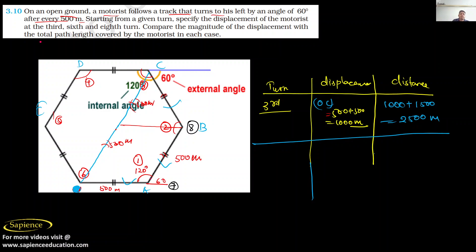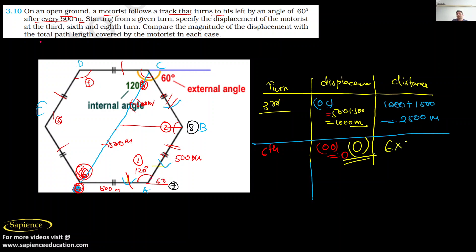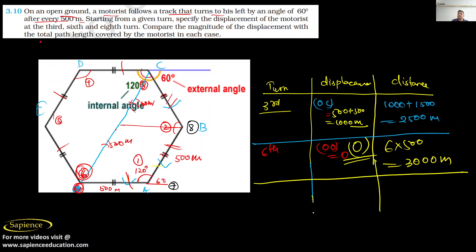Now for the 6th turn: the 6th turn brings the motorcycle back to the starting point O, so the initial and final points are the same. Therefore displacement is 0. The total distance covered is 6 sides of 500 meters each: 6 × 500 = 3000 meters. You can see the clear difference between displacement and distance here.